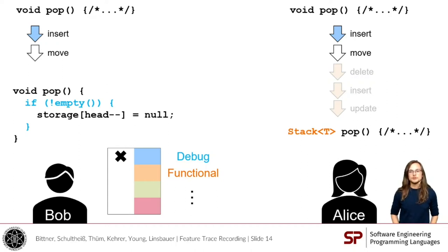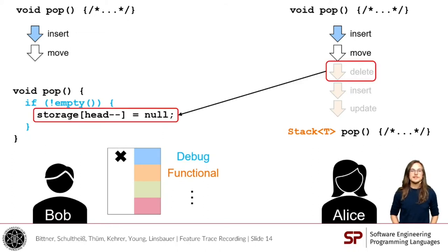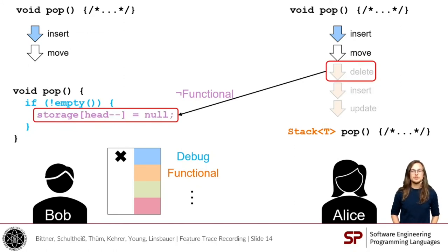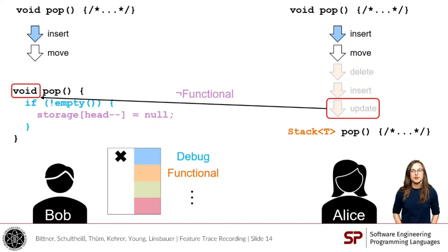So we are done, right? Not really — we can derive more knowledge. We see that Alice deleted this line of source code from her variant. Does that mean it should be deleted from all variants and the entire codebase? Not really. Alice said it should be deleted from Feature Functional, but that doesn't mean it should be deleted everywhere. In particular, it should be deleted only in Feature Functional, but it might still be valid in variants not implementing it. We can make this knowledge explicit by assigning the formula 'not functional' to this line, such that it's present in exactly those variants that do not implement Feature Functional, highlighted in purple. And the same applies to the update edit — the last one — where the return type was changed, which should only be performed in variants implementing Feature Functional, but not in those not implementing Functional, such as Bob's clone.